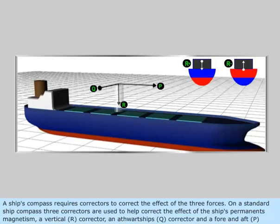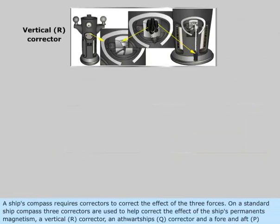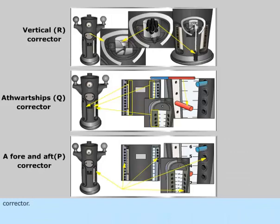A ship's compass requires correctors to correct the effect of the three forces. On a standard ship compass, three correctors are used: a vertical R corrector, an athwartship Q corrector, and a fore and aft P corrector.